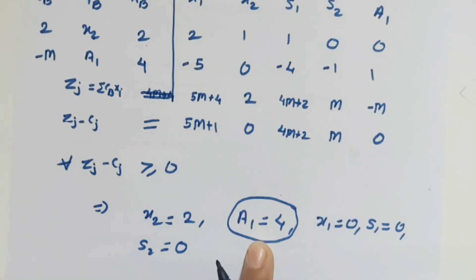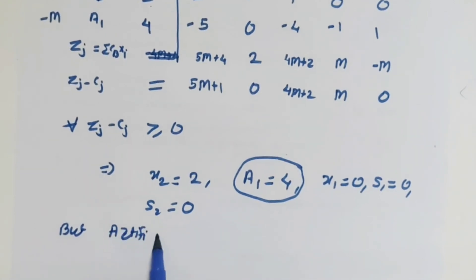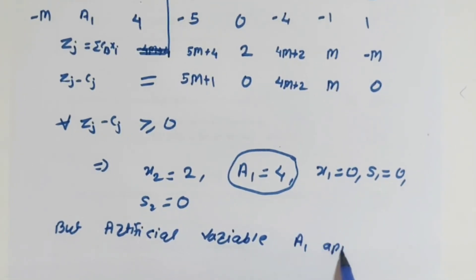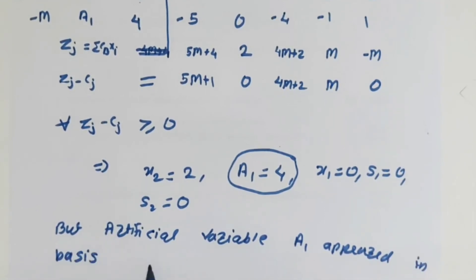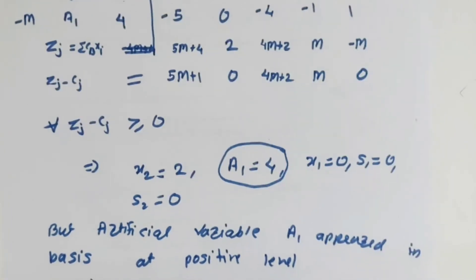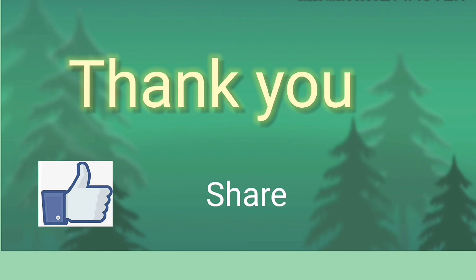What will happen? Maximize z will be in the form of m, and what can we say? This implies that the artificial variable a1 appears in the basis at a positive level. Therefore, solution does not exist. Thank you. Like, share, and subscribe.